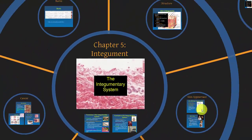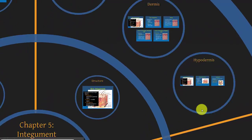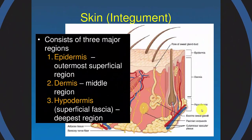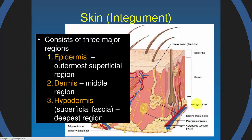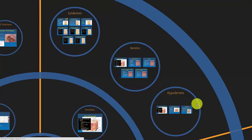So that's our beginning. We're going to go to structure next. There are three layers: the epidermis — epi means above, so that's the outermost, most superficial region. The dermis is the middle layer. And then the hypodermis, which is not necessarily part of the skin because it's below the dermis, but we'll still cover it here because there's no other place to cover it.